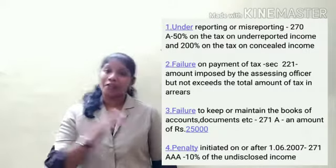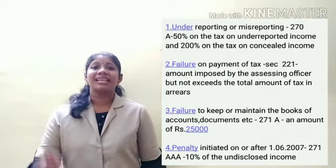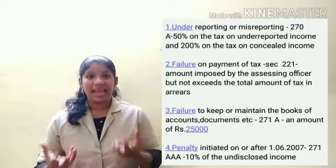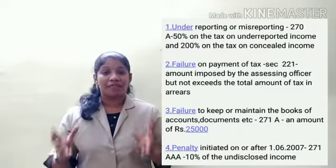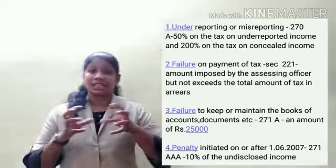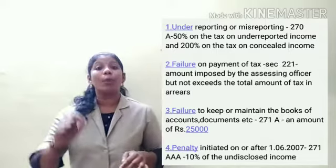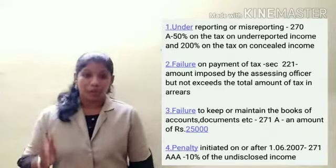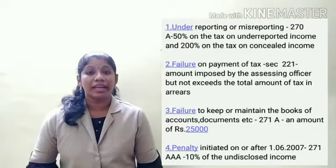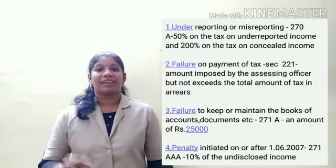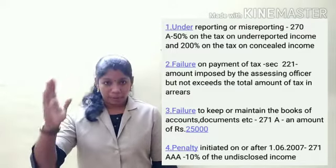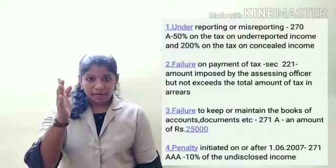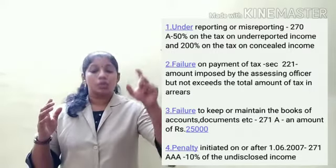Misreporting of Income or Underreporting of Income — misreporting of income means the assessee has made misrepresentation or suppression of facts, or has recorded incorrect entries in the books of accounts. There are two parts: first, Underreporting of Income, and second, Misreporting of Income, under Section 270A.